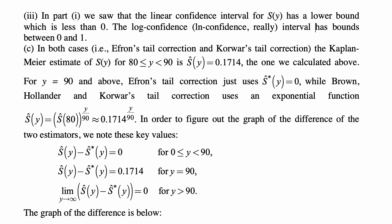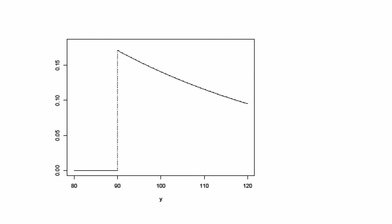that S-hat(y) minus S-hat-star(y) is 0 for y between 0 and 90, and then it's equal to 0.1714 for y equal to 90, and then it converges to 0 as y approaches infinity for y more than 90. And the graph is below, so I'll show it to you in a moment. So this is the graph that we get, as you can see. It's a bit strange that there's this zero-valued beginning, but that's the setup of the two methods.